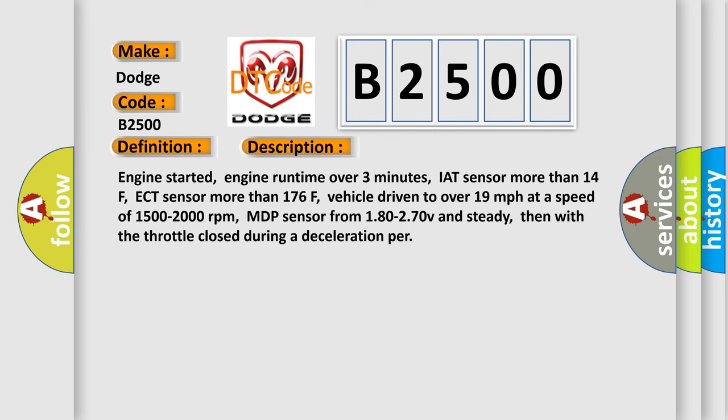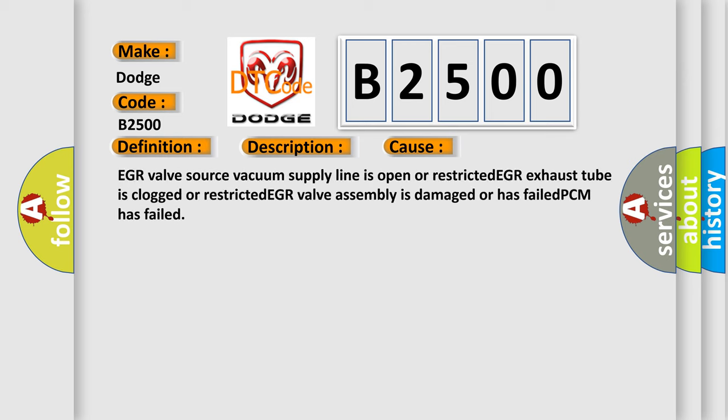Engine started, engine runtime over three minutes, IAT sensor more than 14°F, ECT sensor more than 176°F, vehicle driven to over 19 miles per hour at a speed of 1500 to 2000 revolutions per minute, MAP sensor from 180 to 270 mV and steady, then with the throttle closed during a deceleration period. This diagnostic error occurs most often in these cases: EGR valve source vacuum supply line is open or restricted, EGR exhaust tube is clogged or restricted, EGR valve assembly is damaged or has failed, PCM has failed.